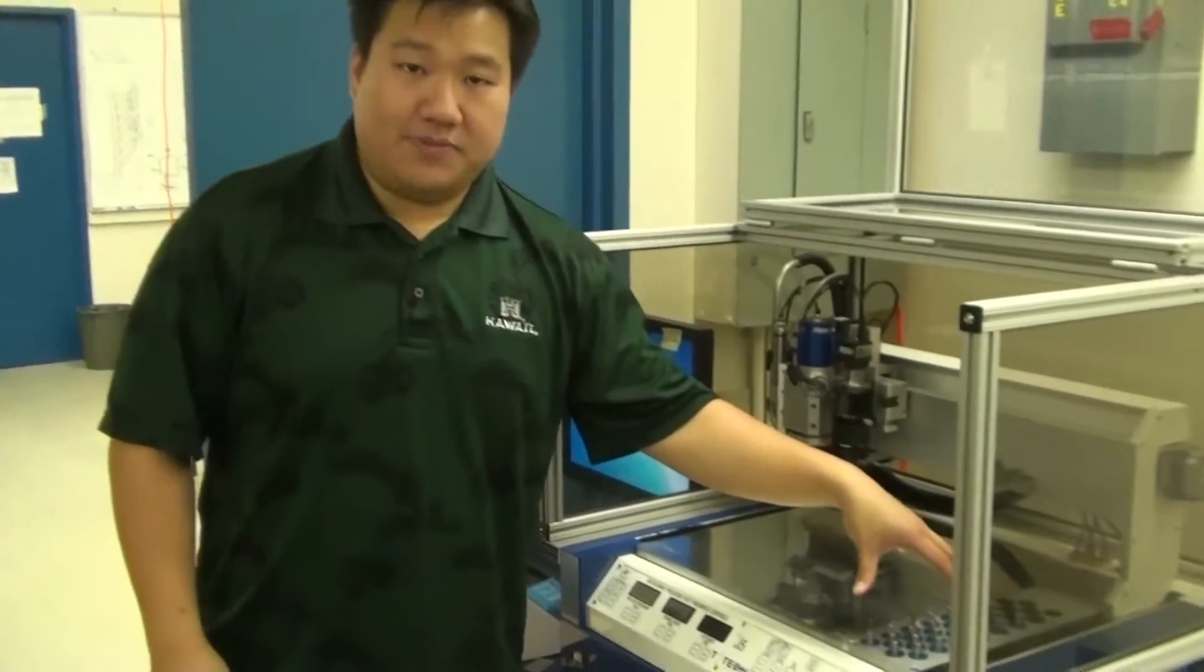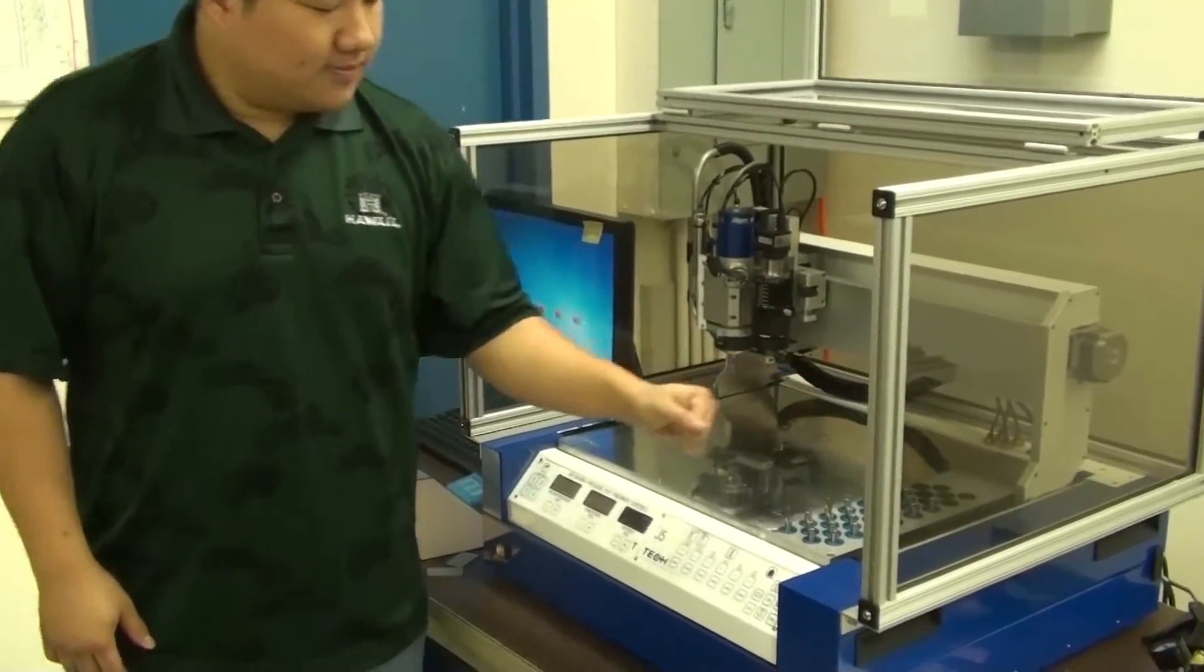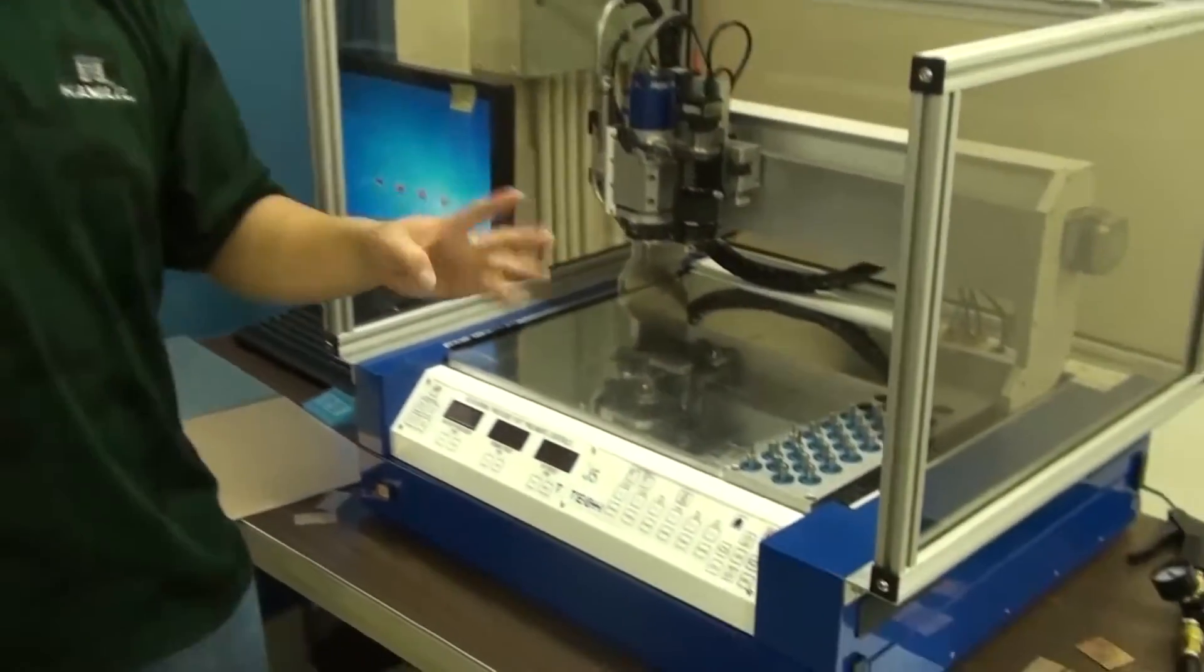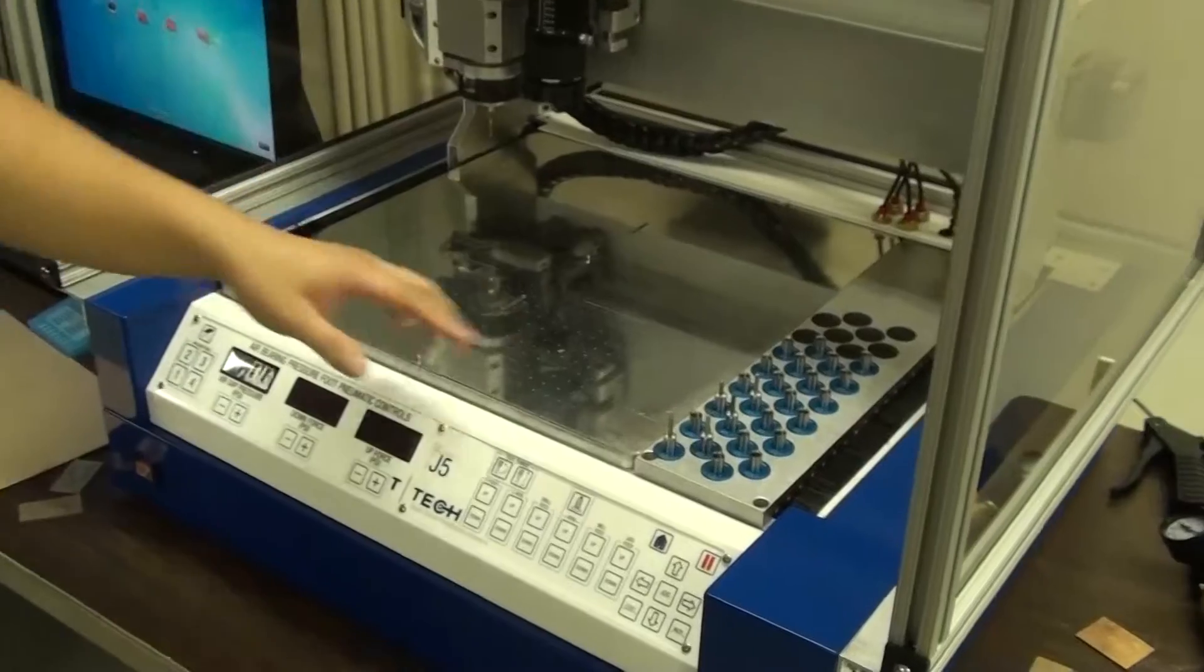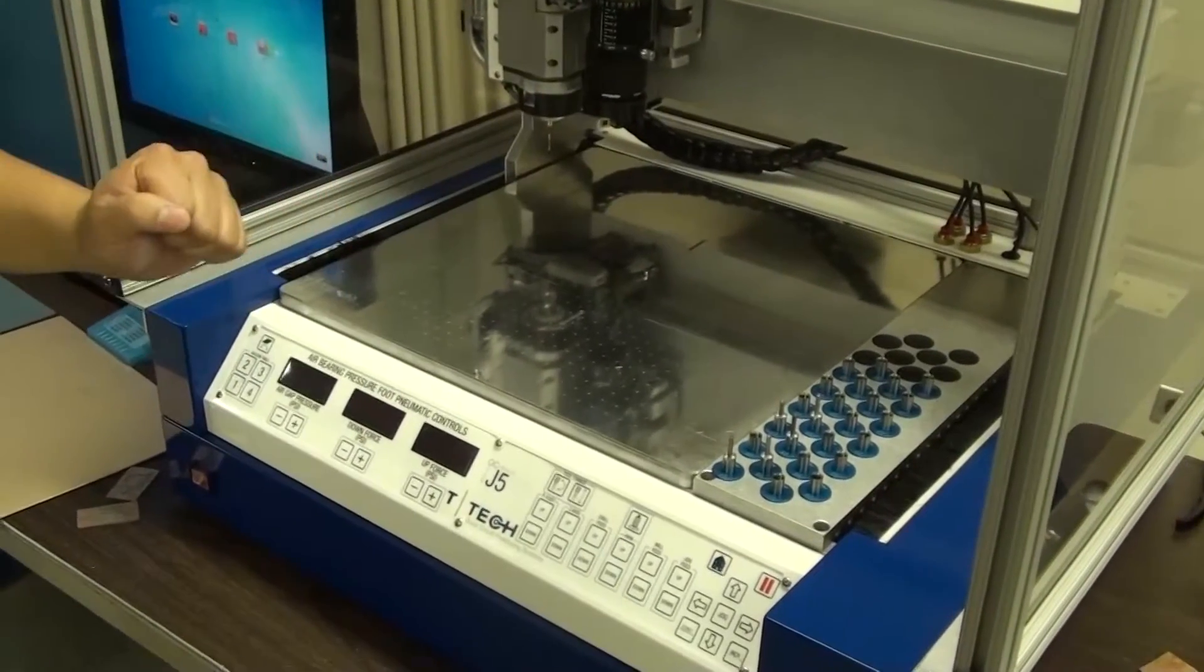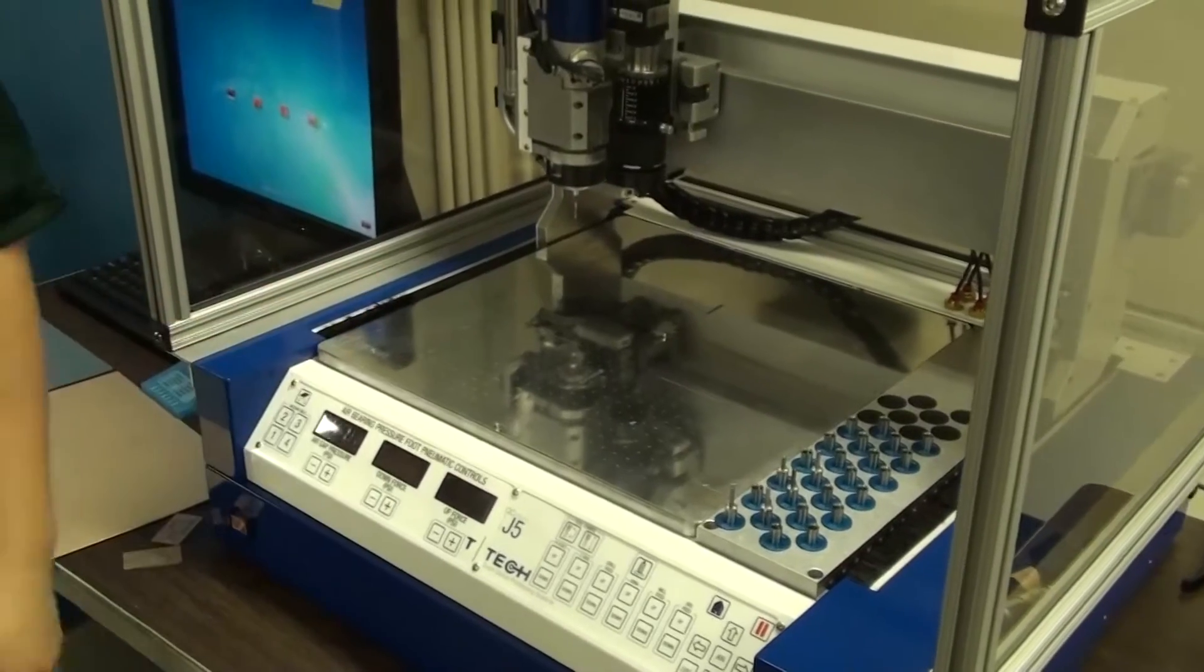Over here we have a tool change pod, which is used for automating the process of the milling machine. There's actually four different tools, which I'll go over later. These tool pods allow you to insert tools in there and automate the entire milling and drilling operation for your board.